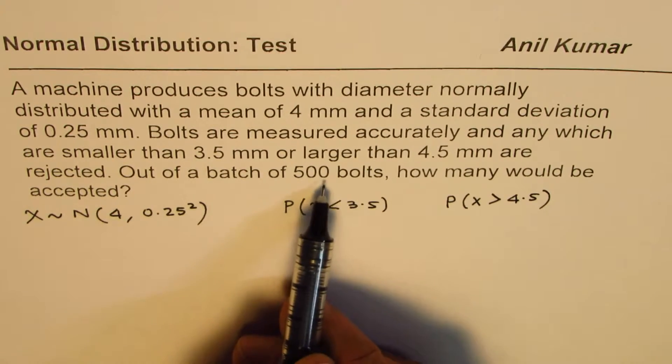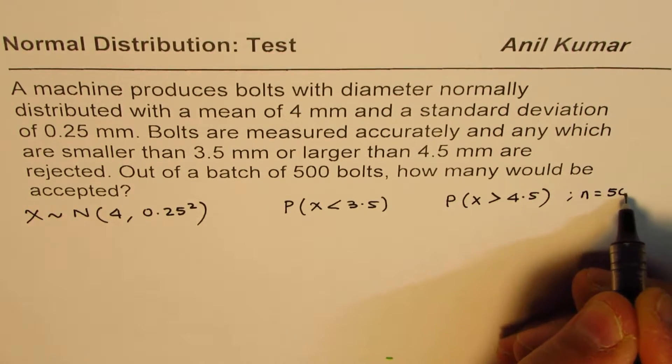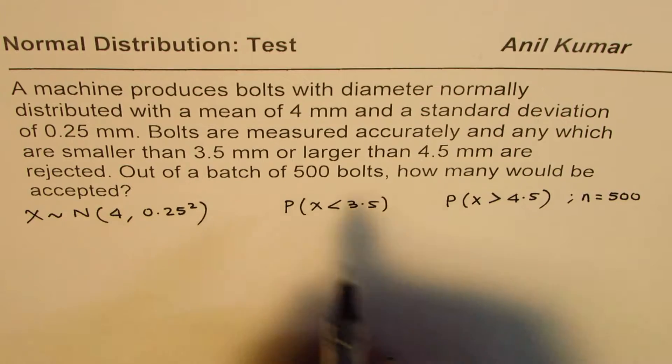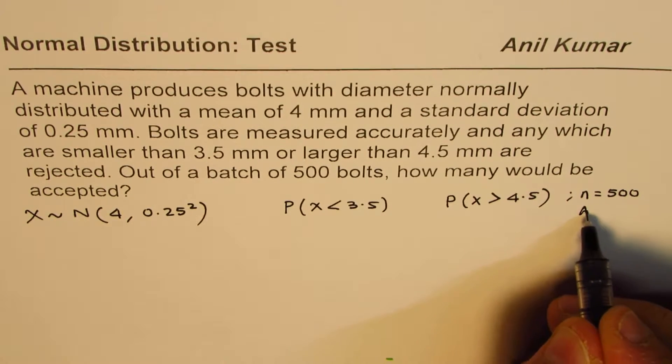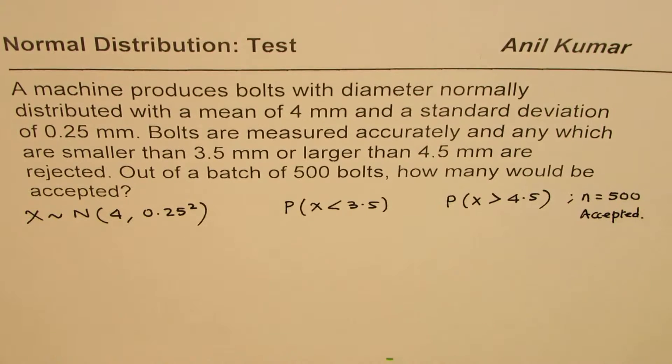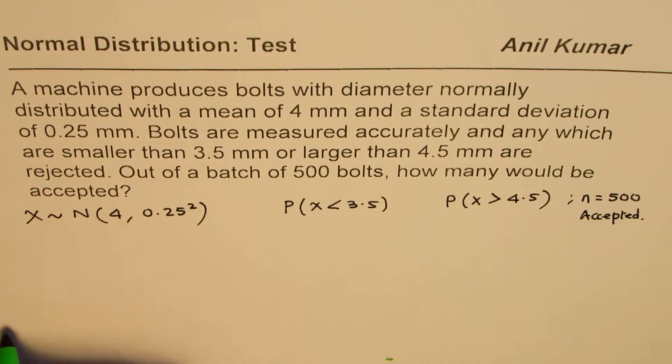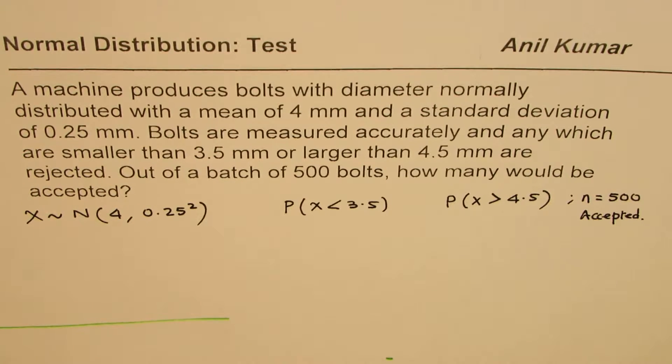Now out of a batch of 500, so we have n equals 500, we are interested in finding how many are accepted. So we are trying to find how many are accepted, that's the real question.